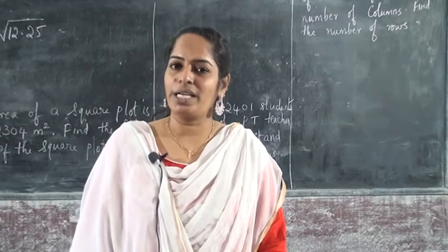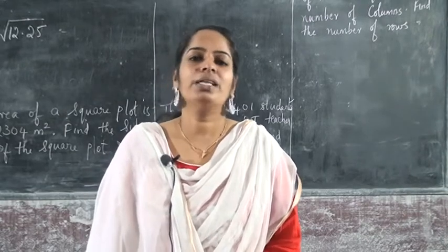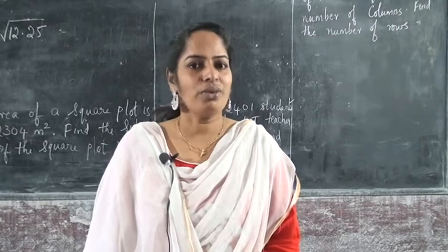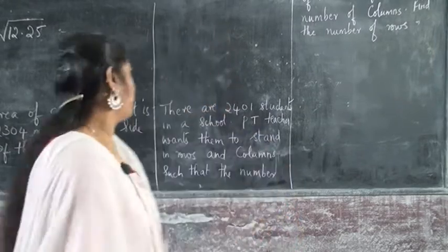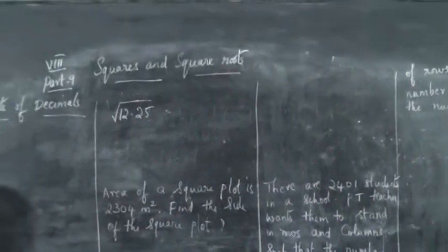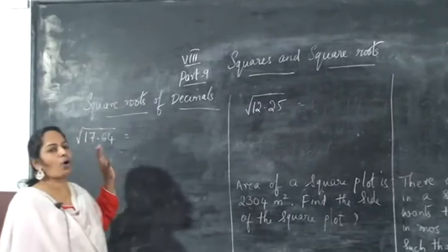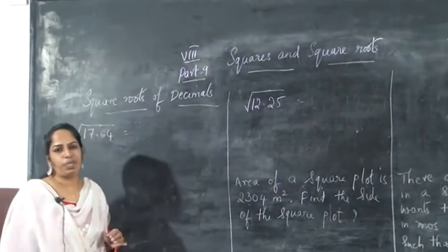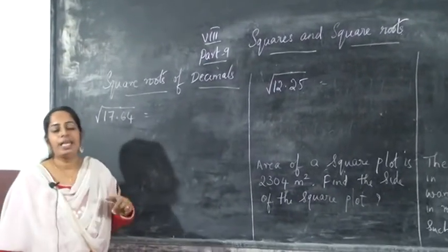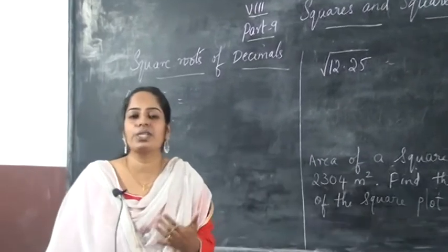We have already studied how to find the square root of different numbers. Now we can see how to find the square root of decimal numbers. Here, square root of decimals — that is the square root of 17.64. How can you find the square root of 17.64? So here we have 17.64 square root.